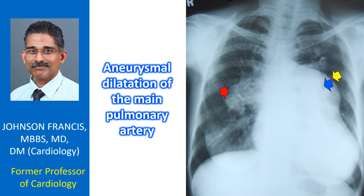Such a picture is usual in pulmonary hypertension due to long-standing increased pulmonary blood flow, as in a large atrial septal defect with left-to-right shunt. One should have expected the end-on view of multiple larger vessels in the lung fields in such a situation.